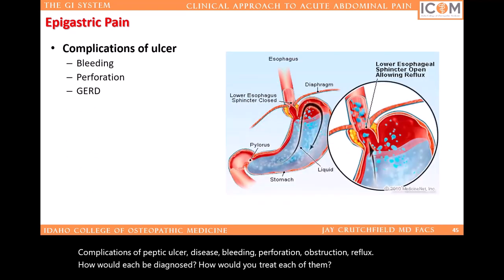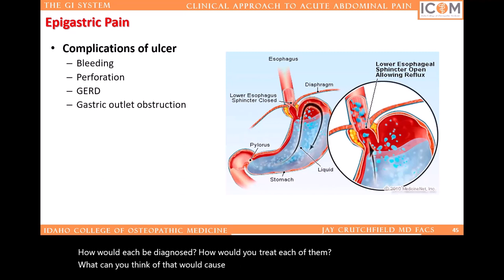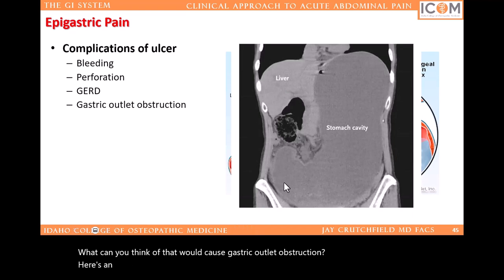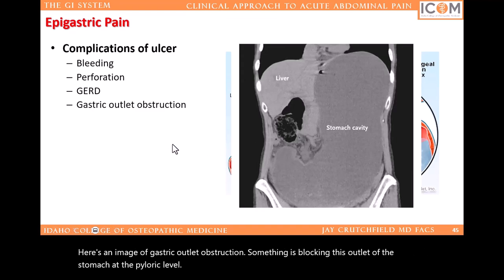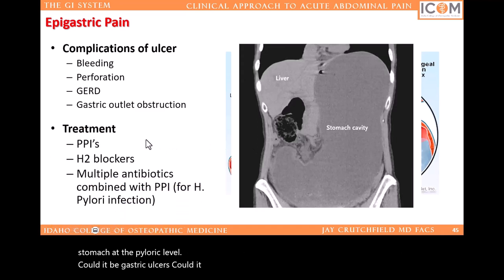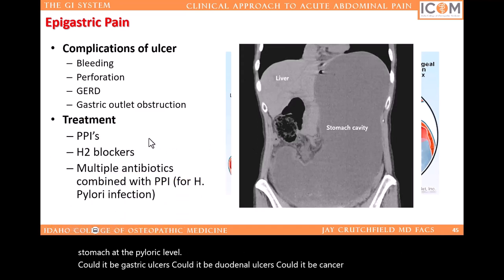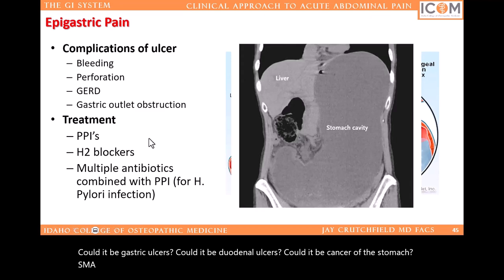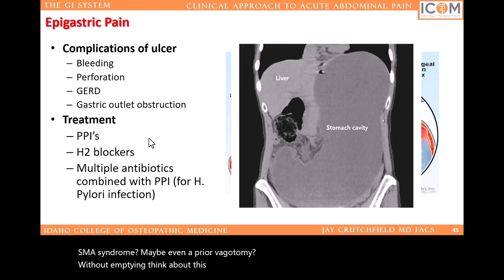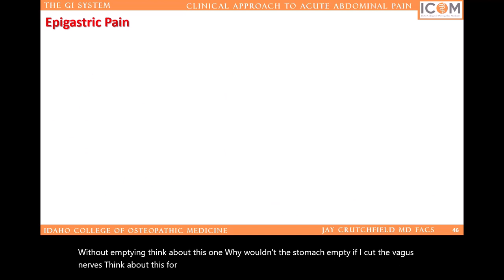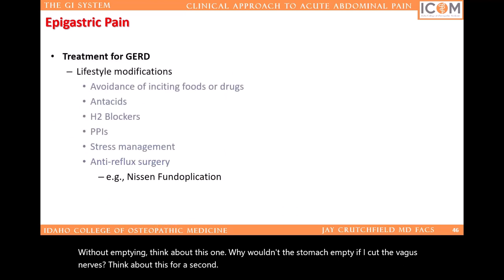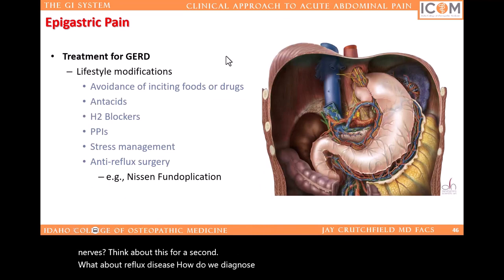Here's an image of gastric outlet obstruction — something is blocking this outlet of the stomach at the pyloric level. Could it be gastric ulcers? Could it be duodenal ulcers? Could it be cancer of the stomach? SMA syndrome? Maybe even a prior vagotomy — why wouldn't the stomach empty if you cut the vagus nerves? Think about this. What about reflux disease? How do we diagnose it and how do we treat it? This is a picture of a Nissen fundoplication where the stomach cardia is wrapped around the distal esophagus to help prevent reflux into the esophagus.